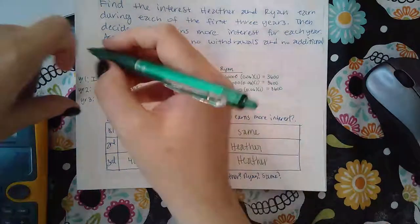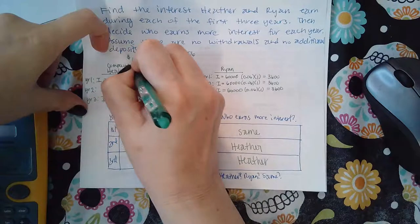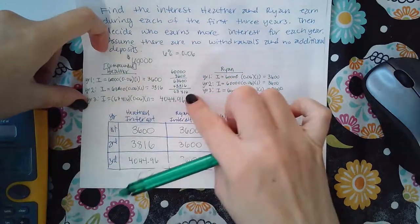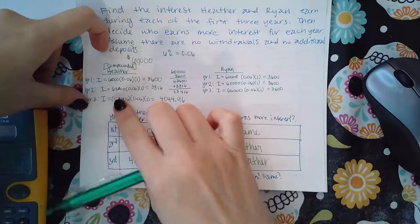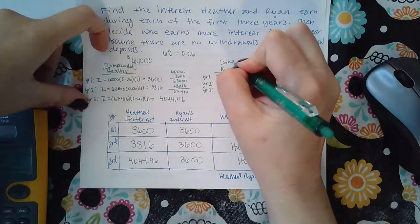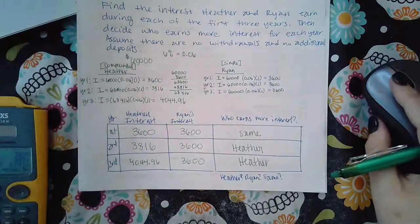But remember for Heather it's the compound interest and that's how you do compound. You keep adding that value to what was already in the bank and using it for the next interest calculation. Simple interest is the same thing every single year, it's the same thing happening.